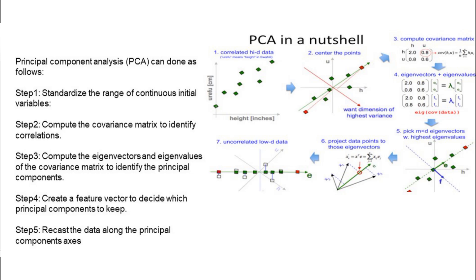There are various steps required to perform PCA. First and foremost, we need to standardize the data. After standardizing, we compute the covariance matrix to identify the correlation between the features. Now, with many features, we need to identify the relationships between them — that is done using a covariance matrix. Once done, the next step is to find the eigenvectors and eigenvalues for the covariance matrix, which is used to identify a new set of features known as principal components.